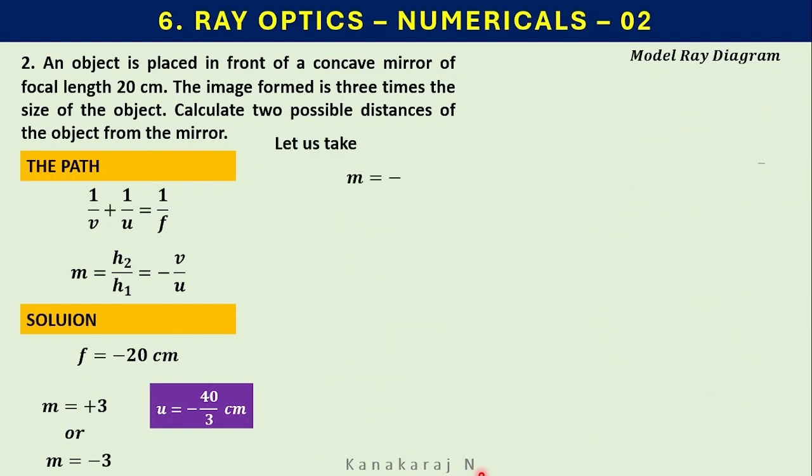Now let us consider m is minus 3. It means the image is real in nature and the u value is greater than the focal length.